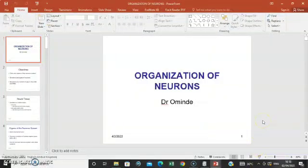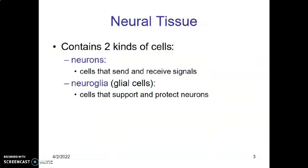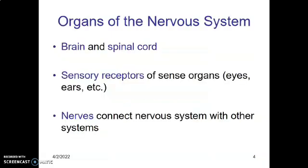We continue with nervous tissue. There are two types of cells in nervous tissue: neurons, which send and receive signals, and neuroglia, which support and protect neurons. The nervous system is divided into two parts.